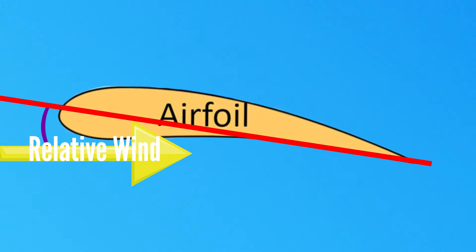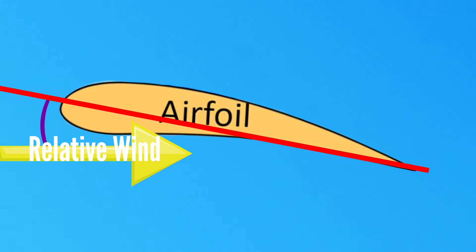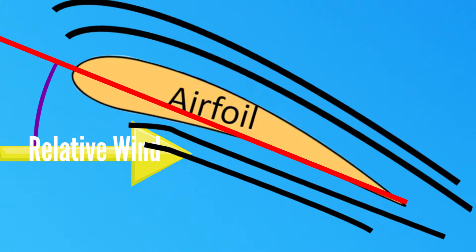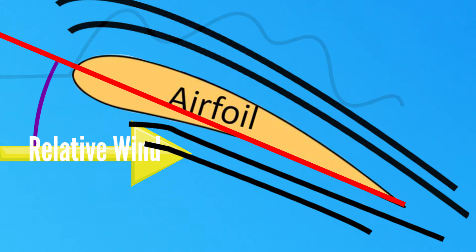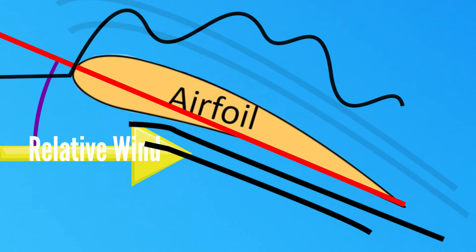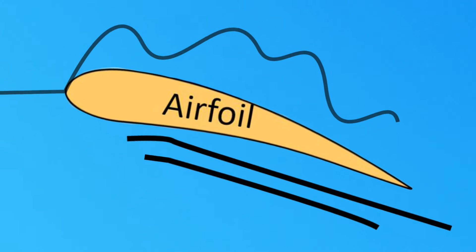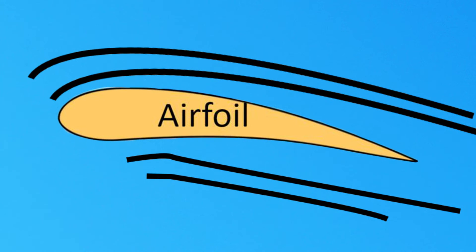As a pilot increases the angle of attack, the airfoil will increasingly generate lift until the critical angle of attack is exceeded. The air flowing over the upper chamber of the wing begins to separate, causing the wing to stop generating lift and stall. To recover from a stall, the pilot must reduce the airfoil's angle of attack below the critical angle of attack so it will generate lift once again.